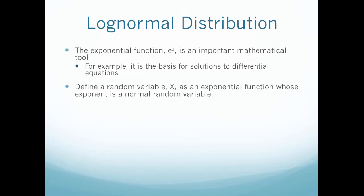Let's see how this works with distributions. If we define a random variable X as an exponential function whose exponent is a normal random variable, then I get the random variable X equals e to the Y where the natural log of X equals Y. So this is showing you where this comes from.